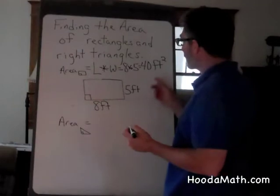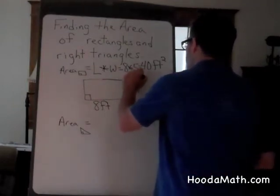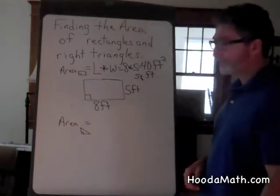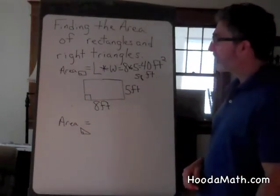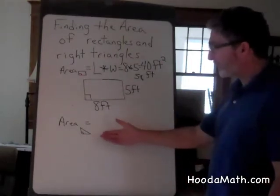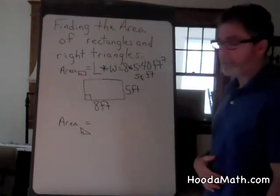You can also write square feet like this. Now, if we know this formula, we can find the formula for the area of a right triangle.